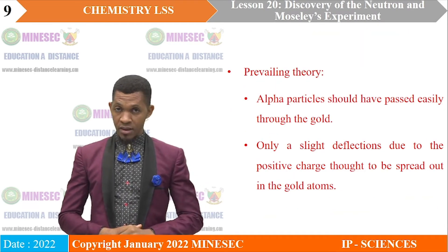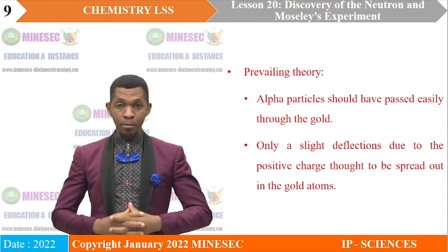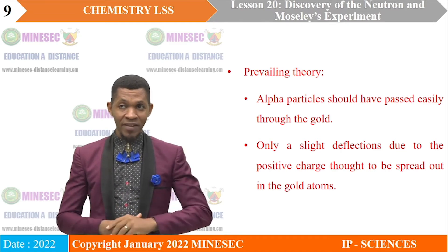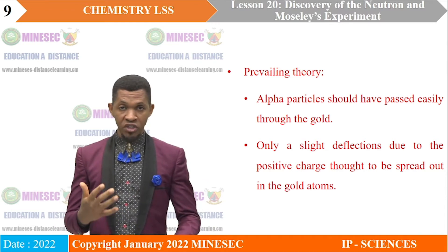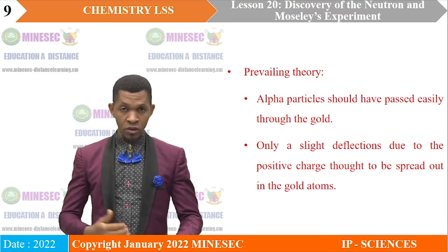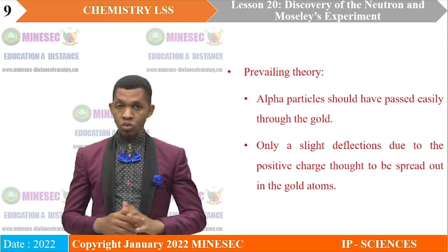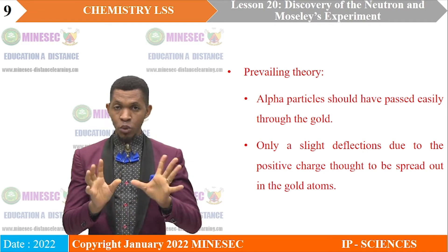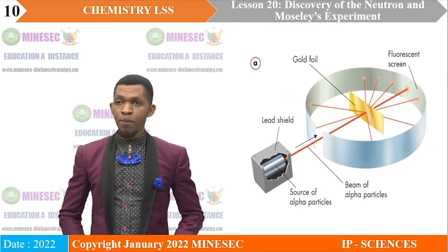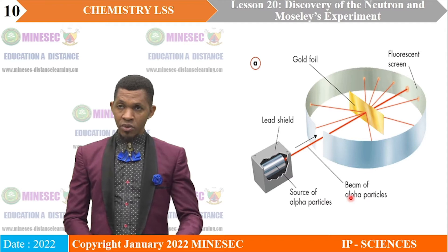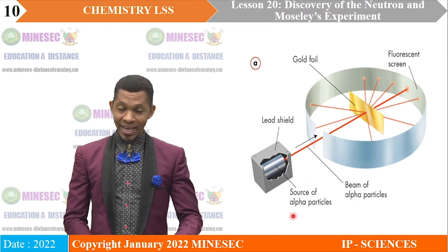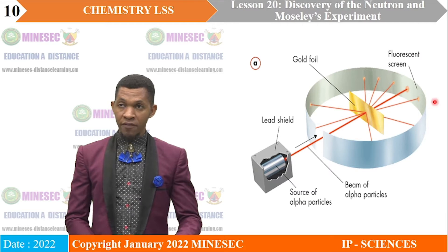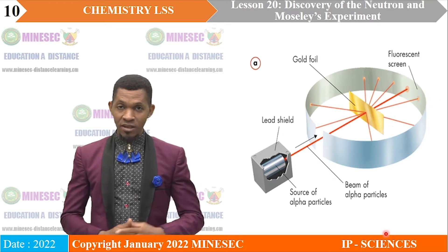Based on the prevailing theory founded on the plum pudding model, most of the alpha particles should have passed easily through the gold foil. Only slight deflections should have been experienced due to the positive charges distributed throughout the atoms in the plum pudding model. There is an alpha particle source covered with lead to protect the experimenter, a gold foil, and a fluorescent screen around the gold foil to detect the scattered alpha particles.